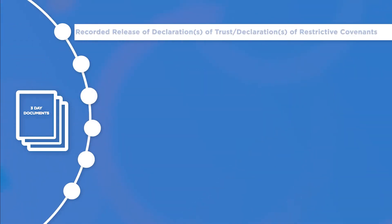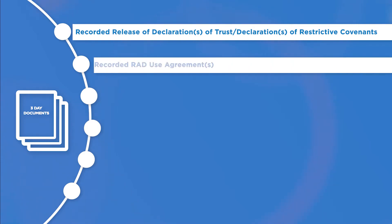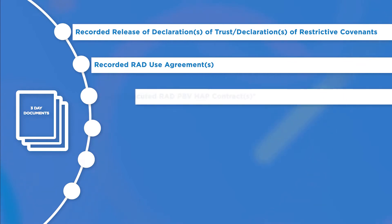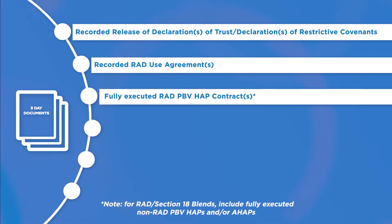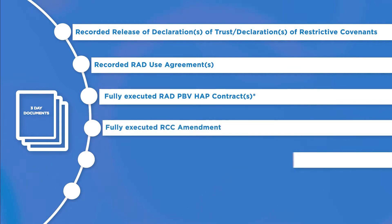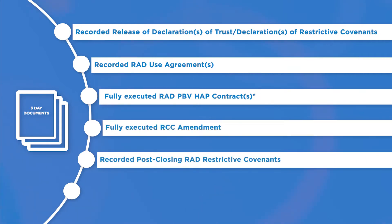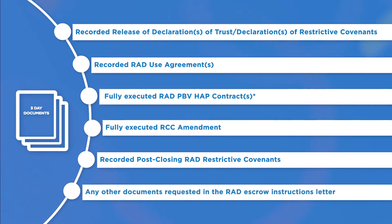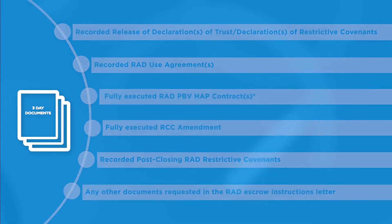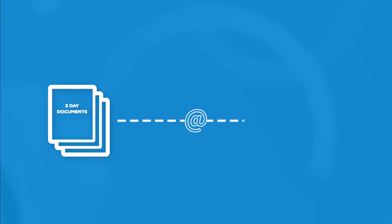The 6 items are: the Recorded Release of Declaration of Trust or Declaration of Restrictive Covenants; the Recorded RAD Use Agreement or Agreements; Fully Executed RAD PBV HAP Contract or Contracts. Please note, for RAD Section 18 blends, include the Fully Executed Non-RAD PBV HAPs and/or AHAPs. Also included are the Fully Executed RCC Amendment, Recorded Post-Closing RAD Restrictive Covenants, and any other documents requested in the RAD Escrow Instructions Letter.